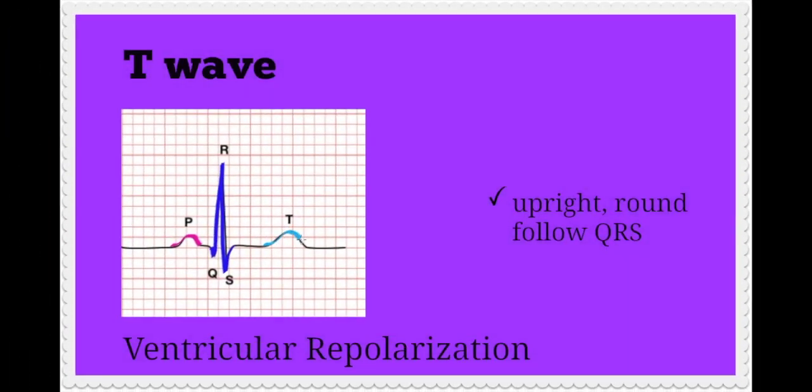The T wave represents ventricular repolarization or a return to rest. T waves are upright, round, and follow every QRS complex. Interesting fact: atria also has a repolarization phase, but you cannot see it because it's buried in the QRS complex.